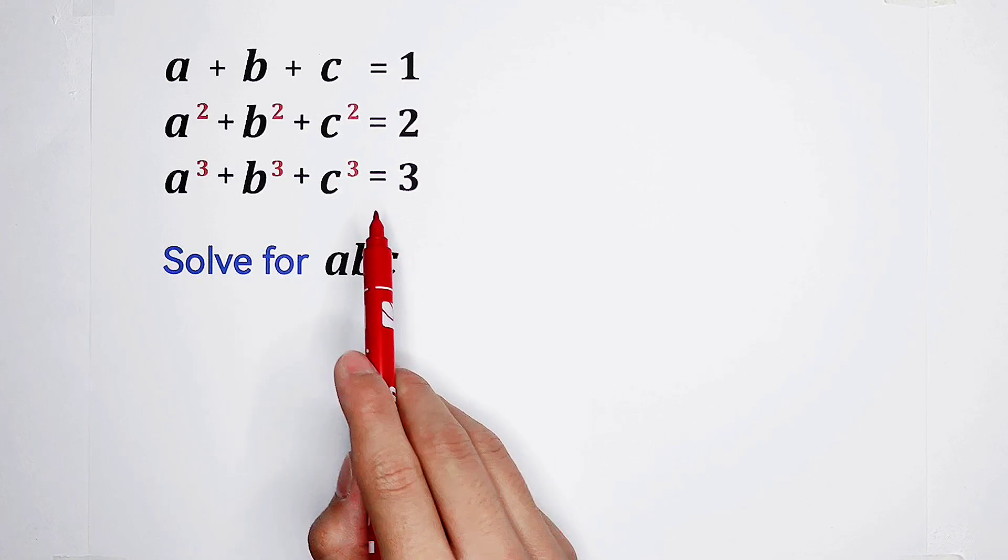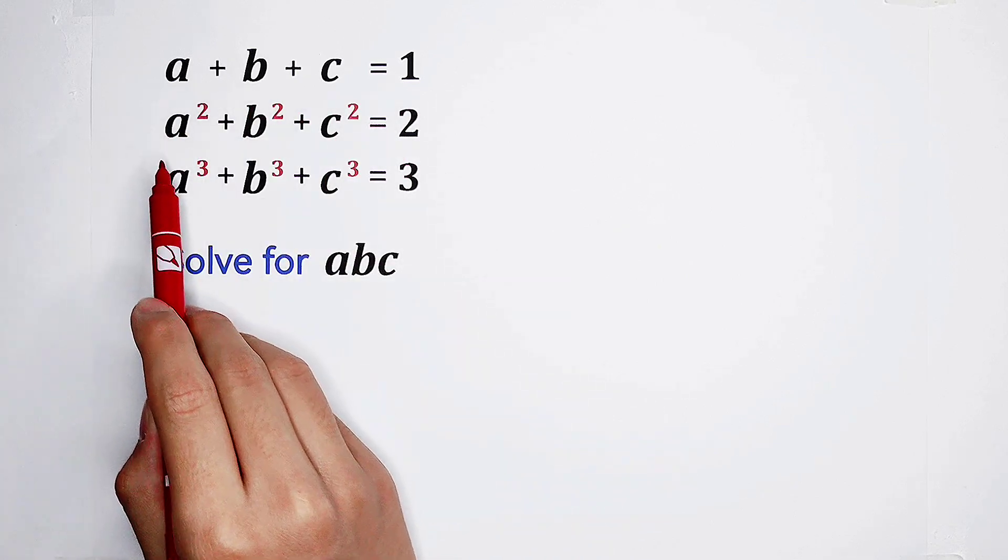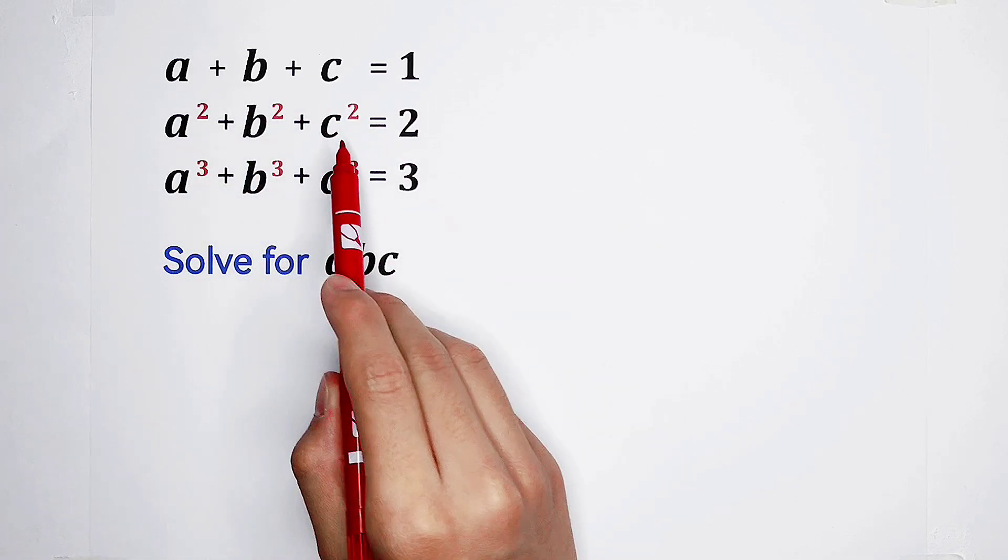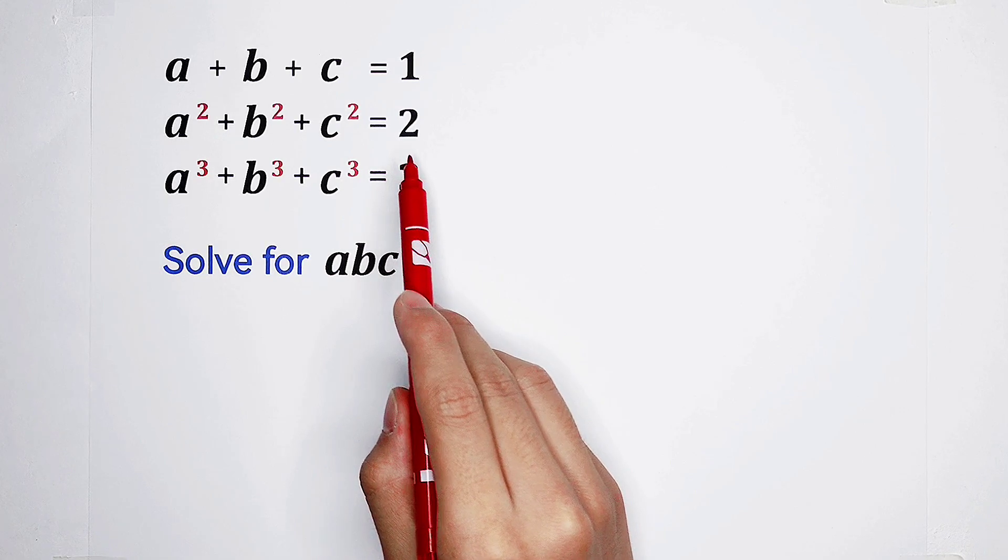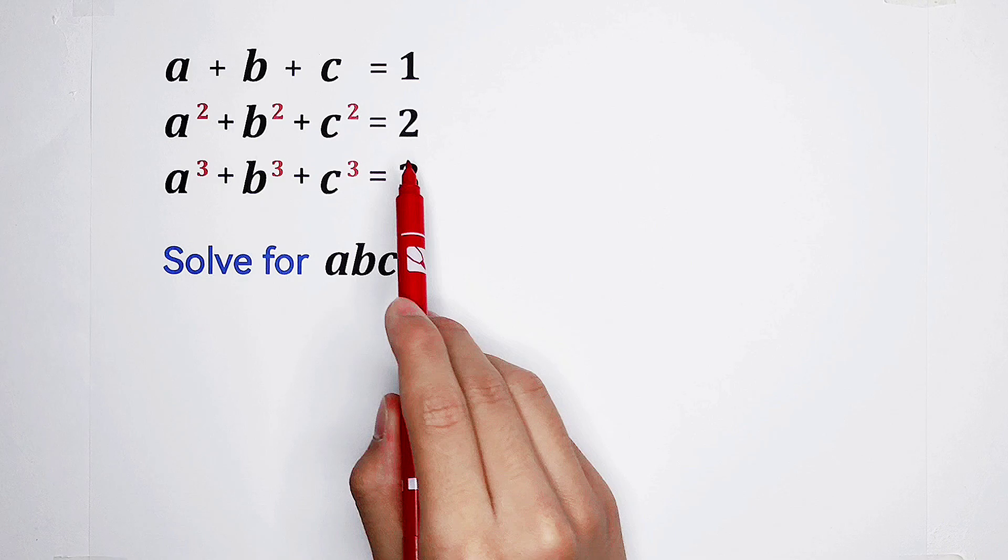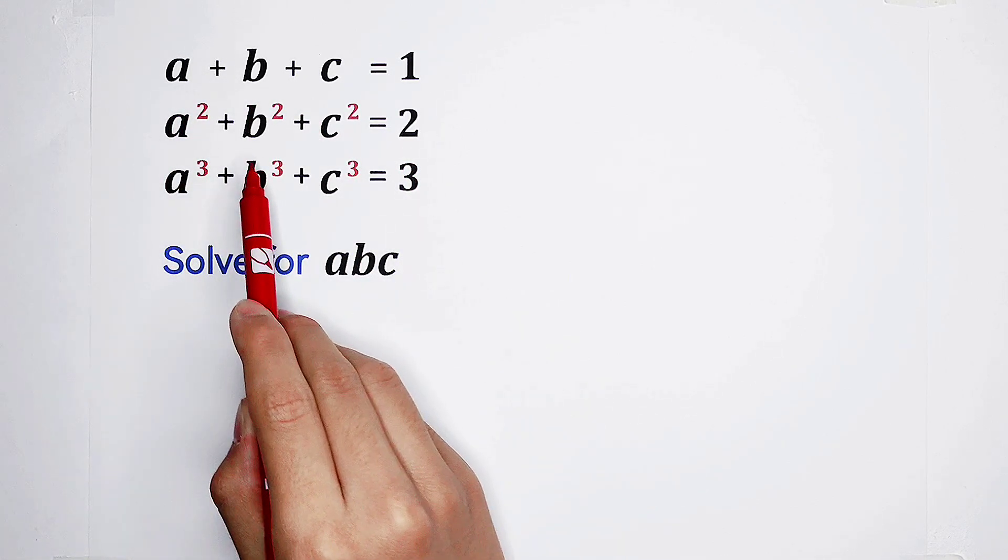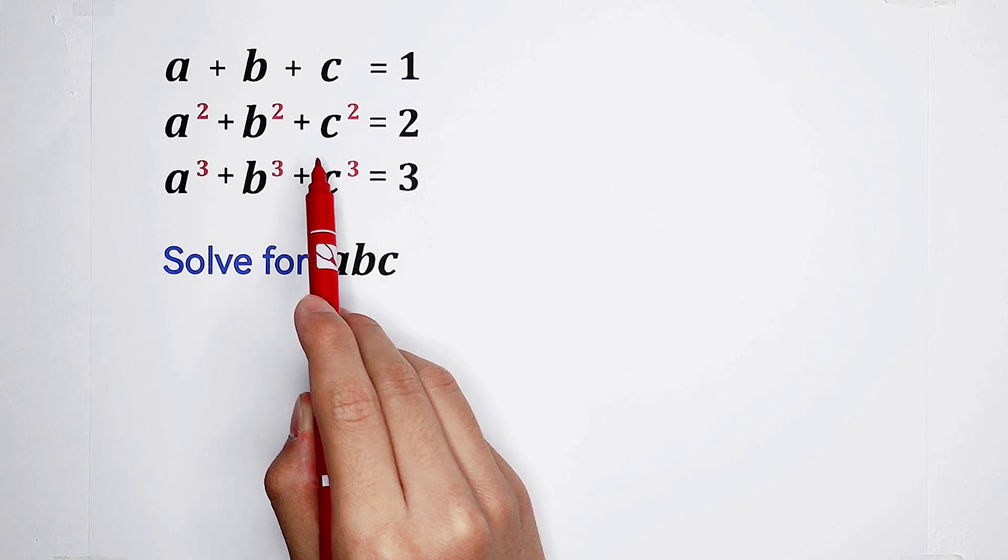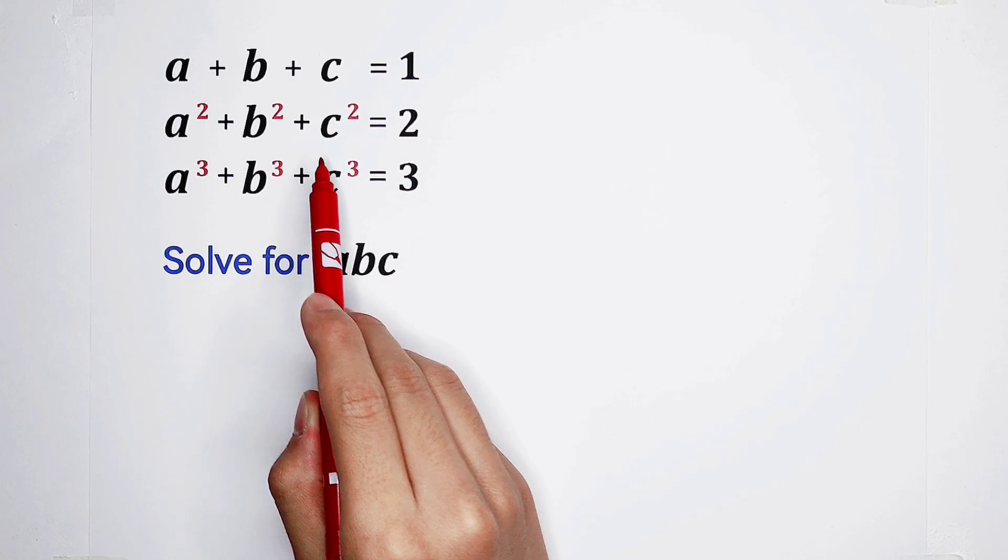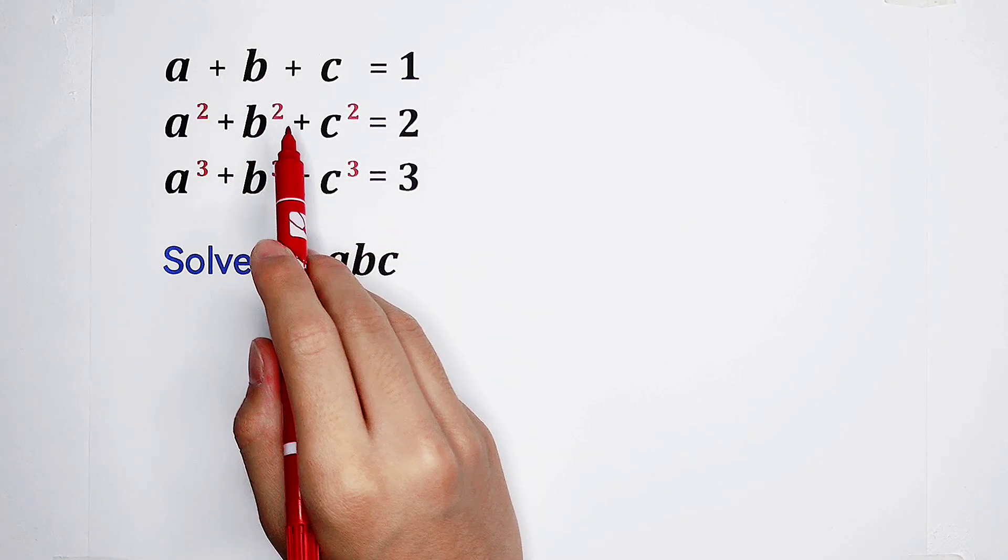Let's have a look at the first two equations. a plus b plus c is 1. a squared plus b squared plus c squared is 2. My question, are there any relationships between a plus b plus c and a squared plus b squared plus c squared? Of course, there are many. However, the most important relationship between them is this formula.